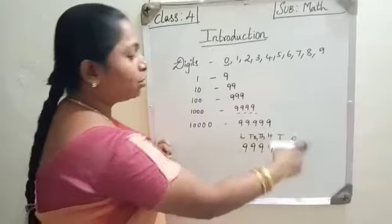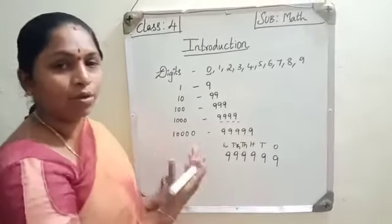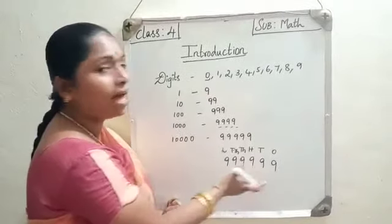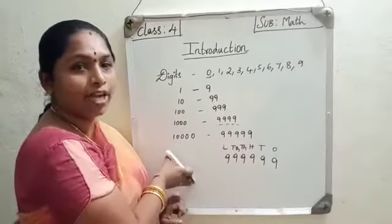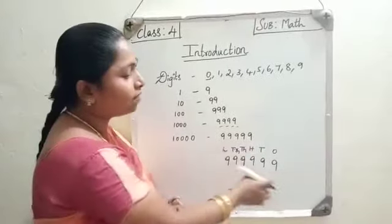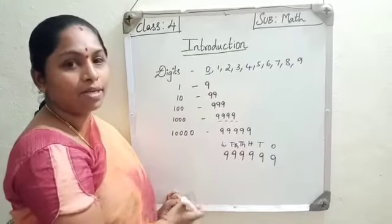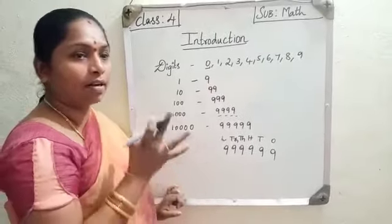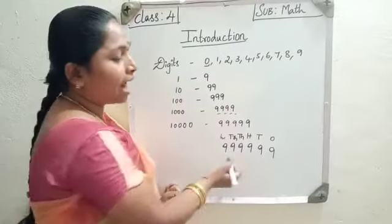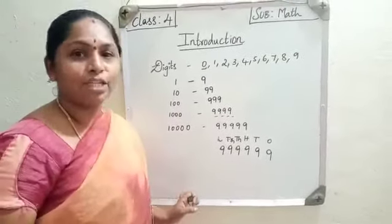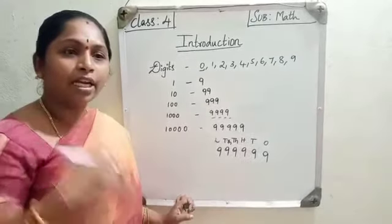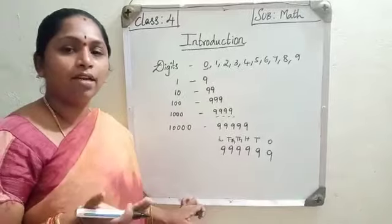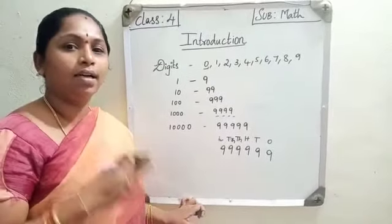When we are able to read any number, we should know about place values and face values. There are different ways to read a number: we will read it in standard form, we will read it in expansion form, and we will read it in words form. These are all the basic concepts you have learnt in your third class.